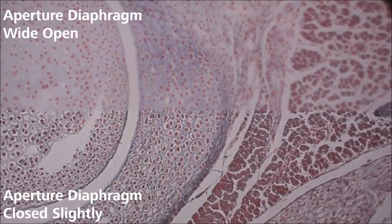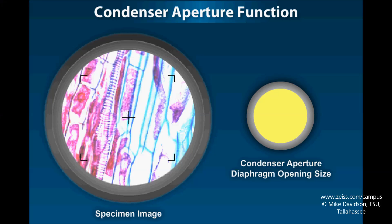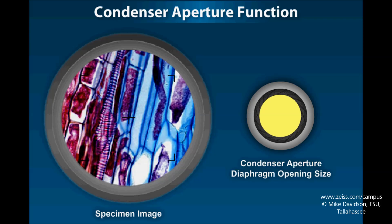Setting the aperture diaphragm opening too small will steal resolution from your image. Never use this diaphragm to control the brightness of your illumination. Use neutral density filters instead.